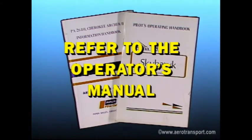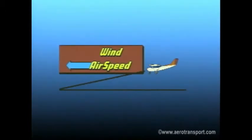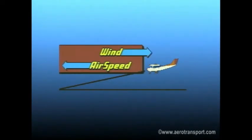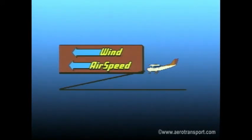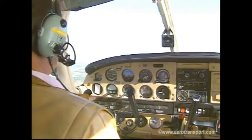Wind will either increase or decrease the distance you're able to cover at a given altitude. When gliding into the wind, distance is increased by using a higher than normal airspeed. With a tailwind, use a lower than normal airspeed to cover more distance.